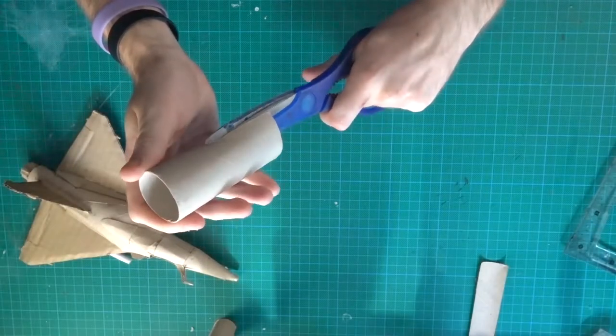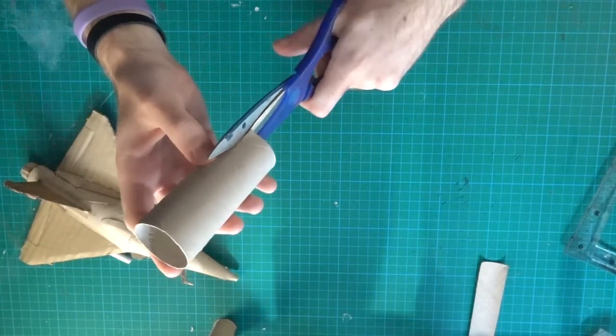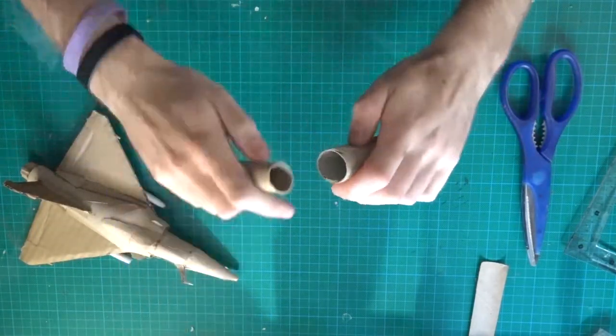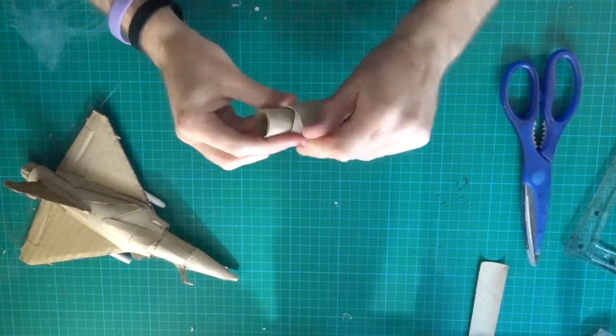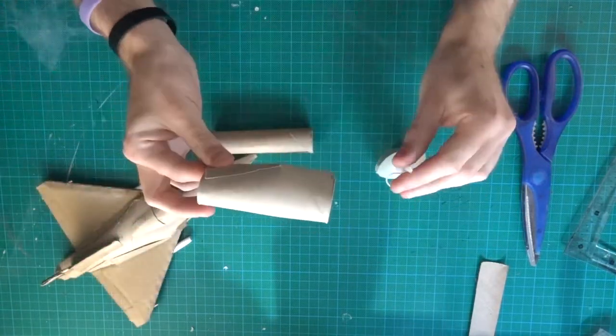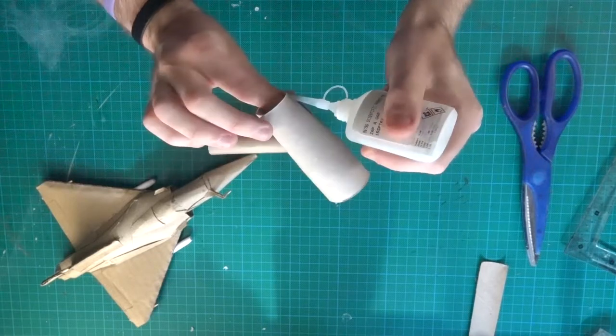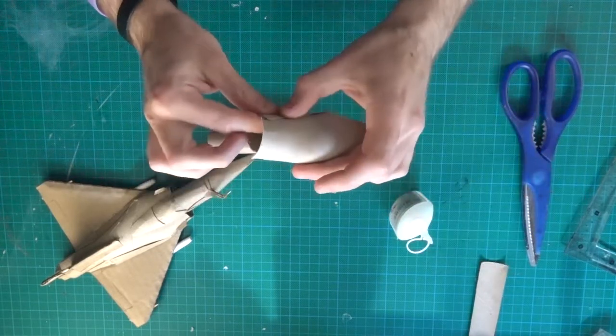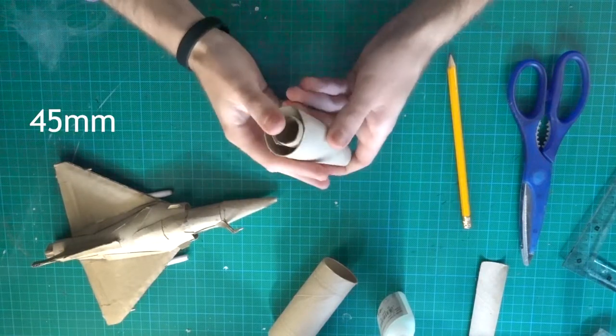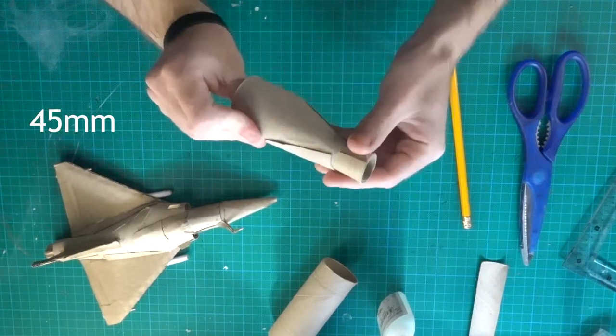Cut a little more than the half of the length on two sides. Then reduce the diameter as the reactor. And glue it. Fit the reactor and make it protrude by about 45 mm.